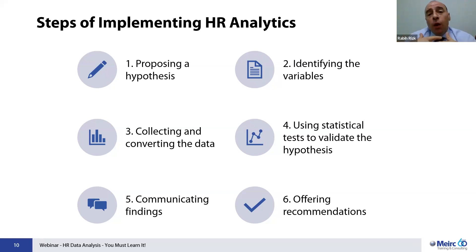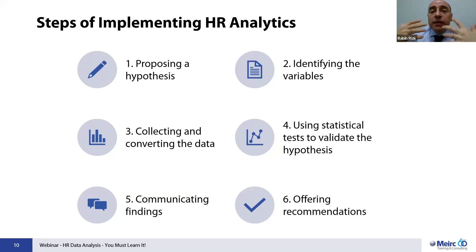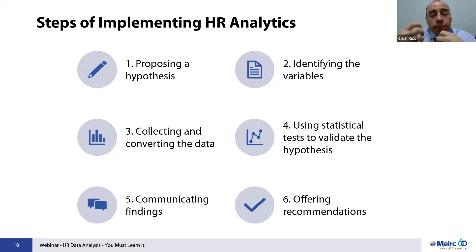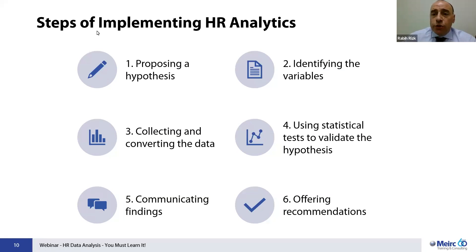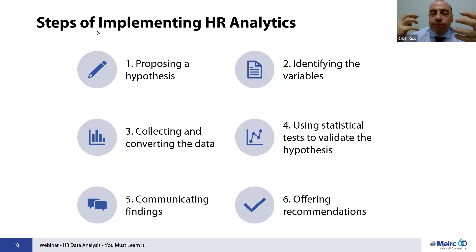Step number two: once we propose a solid, interesting hypothesis — which usually comes in the shape of a question — we need to identify the variables it encompasses. Variables are the main features we are trying to relate together. For example: 'The older you get, the less interest you have in going out.' That's a hypothesis with two variables — age, and the number of times you go out per month. These are variables we measure in order to validate our response.